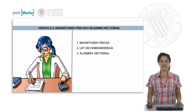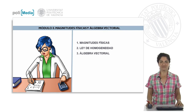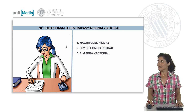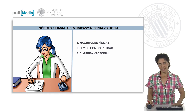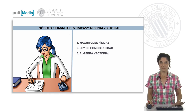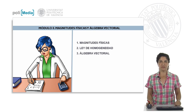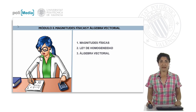Hello everybody. We start today with the first class of this introductory course in mechanics for engineering studies. We're going to start with the first module — module zero — on physical quantities and vector algebra. We've called it module zero because it is going to be more than a study of physics; it will be a study of basic math concepts that we need to successfully tackle this course. Within this first module, we are going to have three presentations.